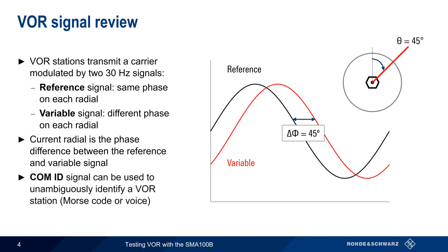The COMID signal component isn't used for determining the current radial, but rather contains a Morse code or voice signal that can be used to unambiguously identify the VOR station.